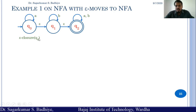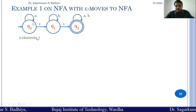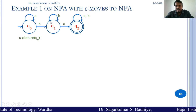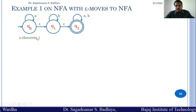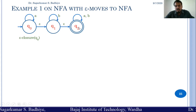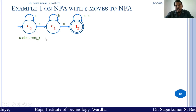Epsilon closure of q0 will consist of q0 itself, and there is a transition from q0 on epsilon to q1, so q1 will also be part of epsilon closure of q0. There is also a transition from q1 on epsilon to q2, so from q0 on reading epsilon there can be a transition to q0, q1, and then to q2. So epsilon closure of q0 consists of q0, q1, and q2.